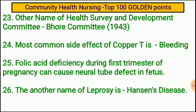The other name of Health Survey and Development Committee is Bhore Committee. The most common side effect of copper-T is bleeding. Folic acid deficiency during the first trimester of pregnancy can cause neural tube defect in the fetus. The another name of leprosy is Hansen's disease.